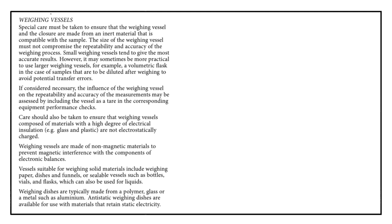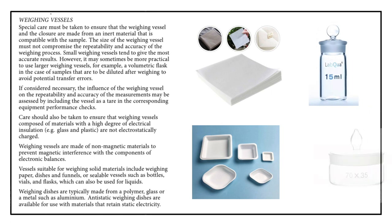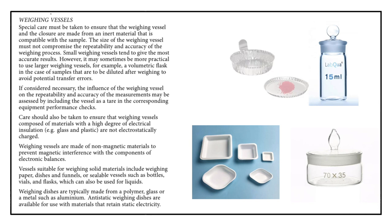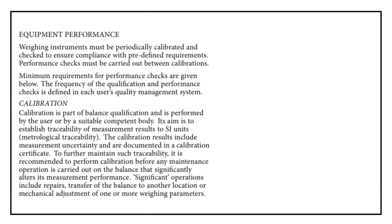Weighing vessels should be made of inert, non-magnetic materials—generally glass or plastic. Ensure the size of the weighing vessel does not compromise accuracy and repeatability. For solid materials, weighing paper, dishes, and funnels are used; for liquids, closed vessels such as bottles, vials, and flasks are used. Weighing dishes are typically made from polymer, glass, or metal such as aluminium. The weighing vessel and sample must have the same temperature as their surroundings and the balance.